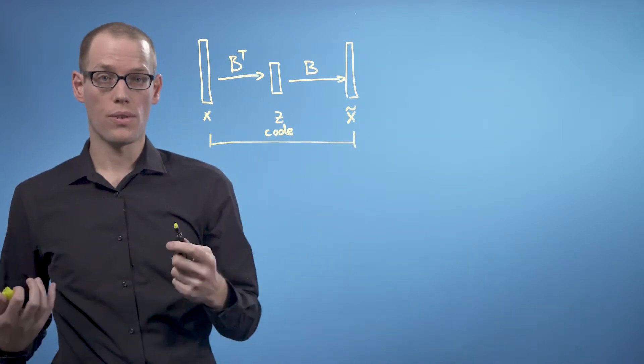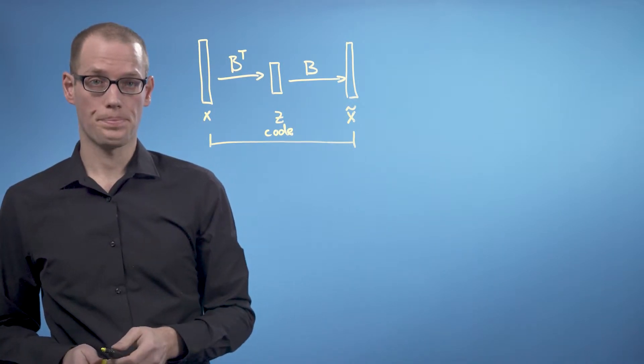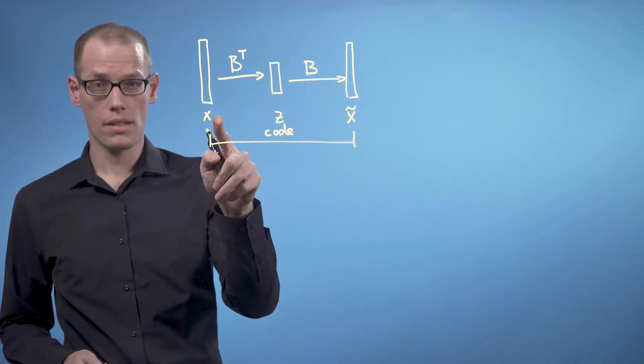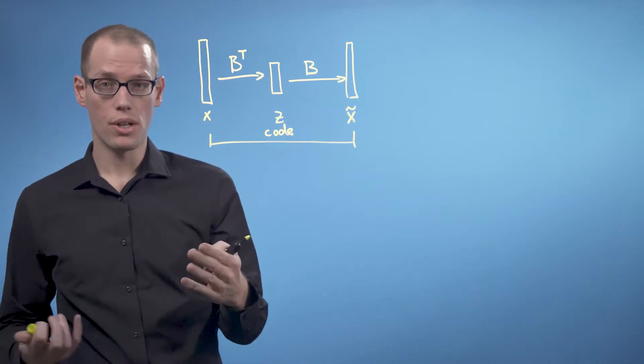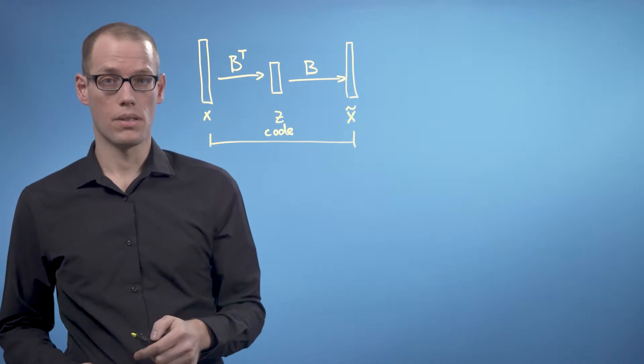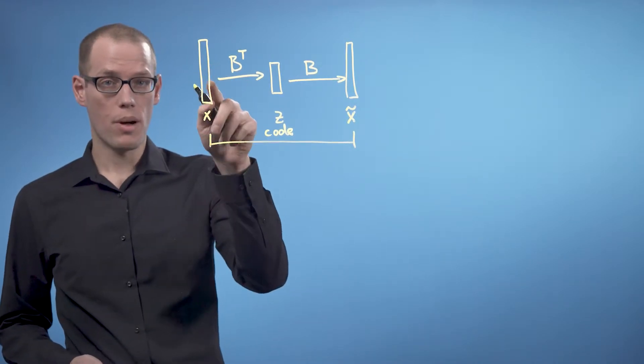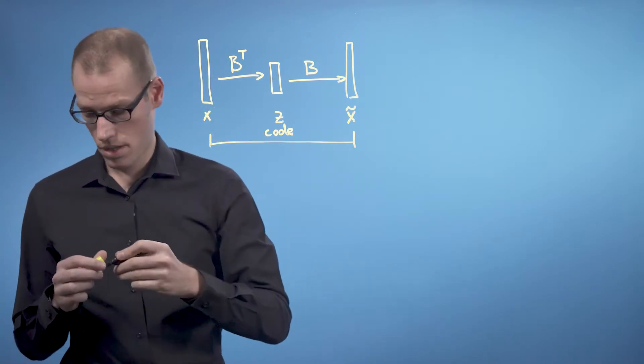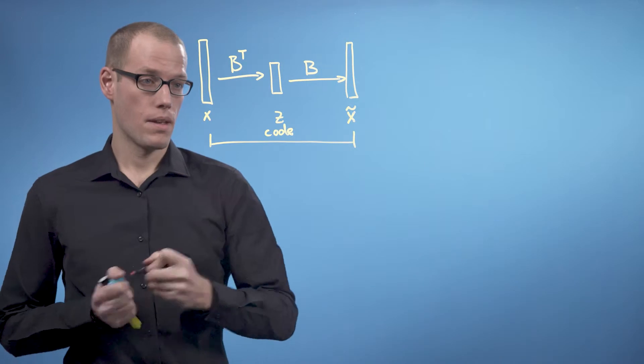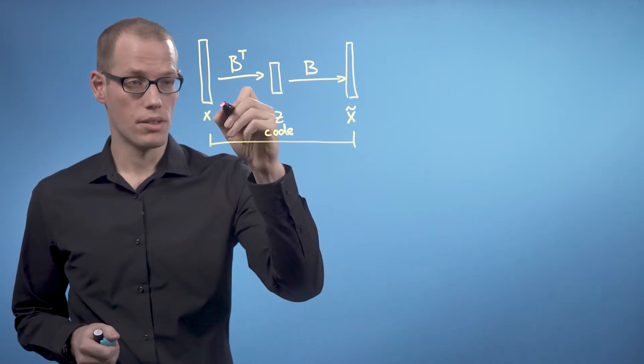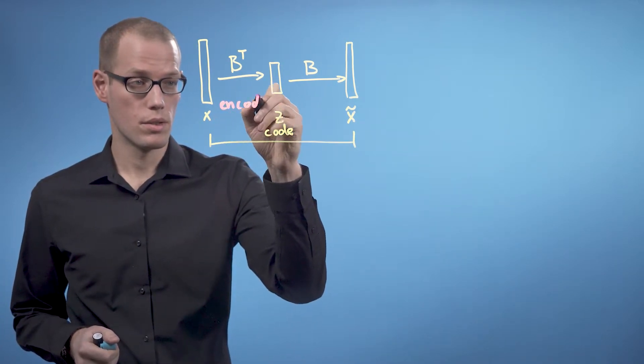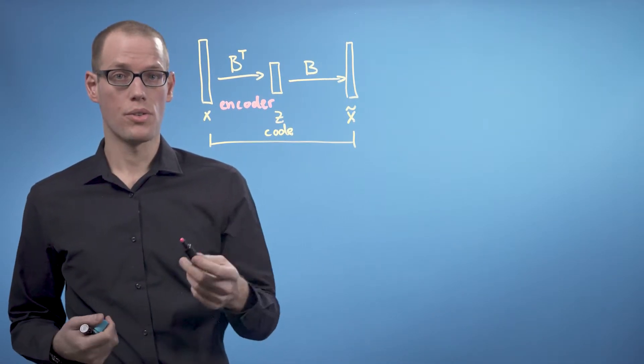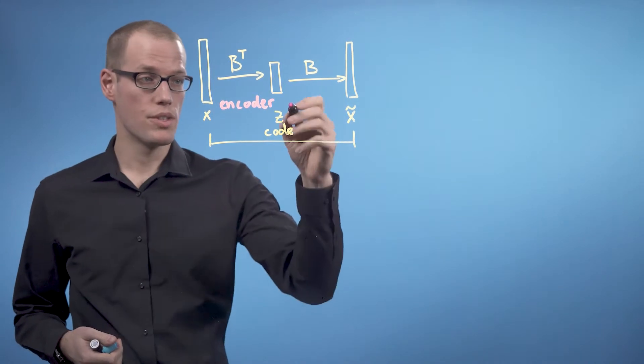We can also think of PCA as a linear autoencoder. An autoencoder encodes a data point x and tries to decode it to something similar to the same data point. The mapping from the data to the code is called an encoder. Let's write this down. So this part here is called an encoder. The mapping from the code to the original data space is called the decoder.